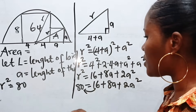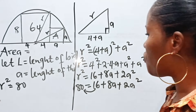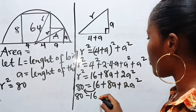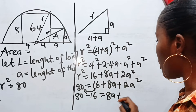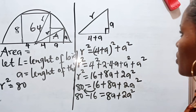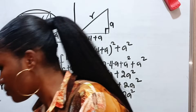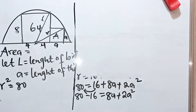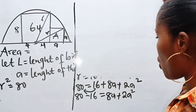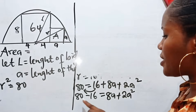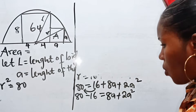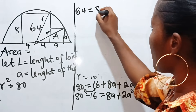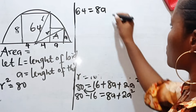Now recall that R squared equals 80. So we can write 80 equals 16 plus 8A plus 2A squared. Transferring 16 to this side, we have 80 minus 16 equals 8A plus 2A squared, so 64 equals 2A squared plus 8A.